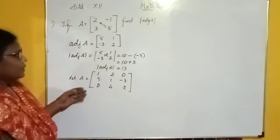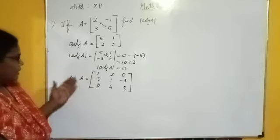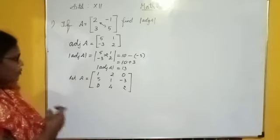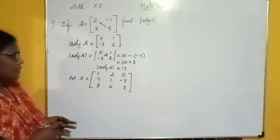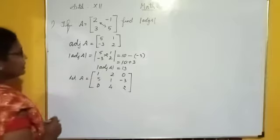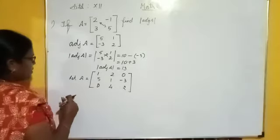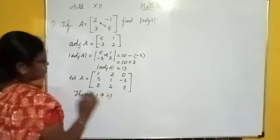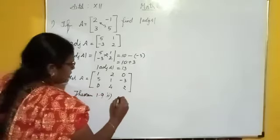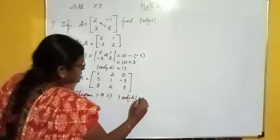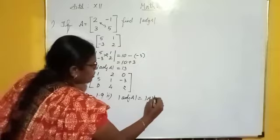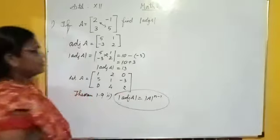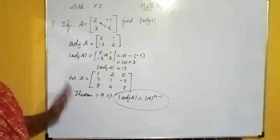Here also, we have to find the determinant of the adjoint. For a 3 by 3 matrix, if you want to find the adjoint, it will be a long process. For this, we can use this theorem. Theorem states that the determinant of adjoint of A is equal to the determinant of A to the power n minus 1. So we can apply this statement.